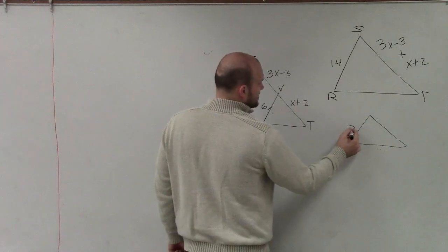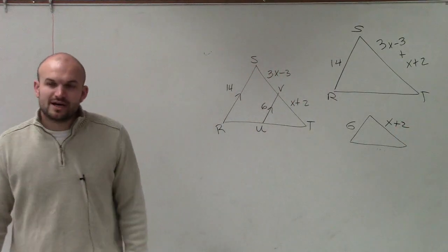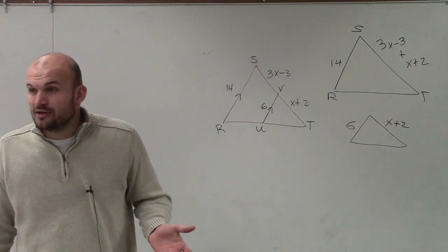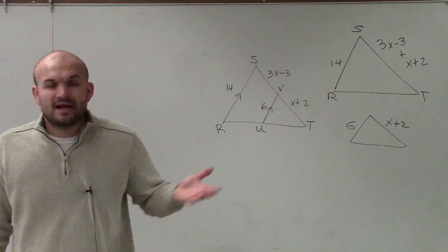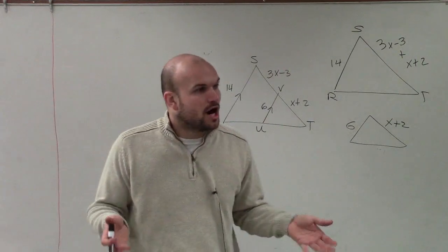Over here, you could say this length is 6, and this one is x plus 2. So what we're trying to do is they say they are similar, but if they're similar, that means their side lengths are proportional.